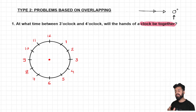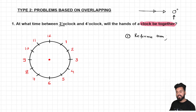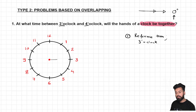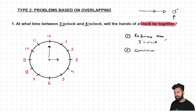Question: At what time between 3 and 4 o'clock will the hands of a clock be together? The condition: angle between two hands = 0 degrees. Step 1 — pick a reference time. Since we want the time between 3 and 4, we start from 3 o'clock. At 3 o'clock, the hour hand points at 3 and the minute hand points at 12. Step 2 — satisfy the condition while assuming the hour hand is stationary.